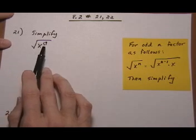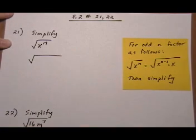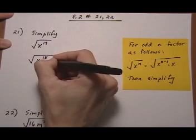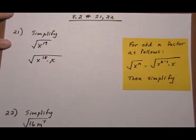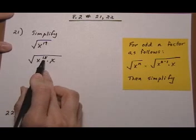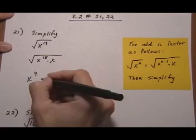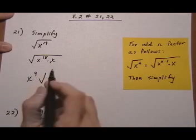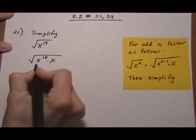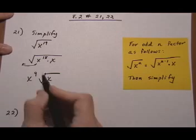So here we have x to the 19th and we're taking the square root. Let's rewrite it — 19 minus 1 is 18. So we rewrite it as x to the 18th times x. And then we can say the square root of x to the 18th is 18 divided by 2, or x to the 9th, and that comes out. We're left over with a root x on the inside because we can't do anything else to that, so we're done. Pull out that one and do the root, and that gives us x to the 9th on the outside.